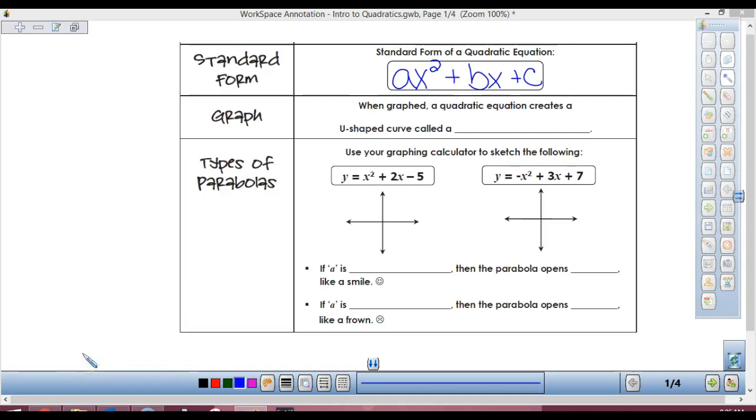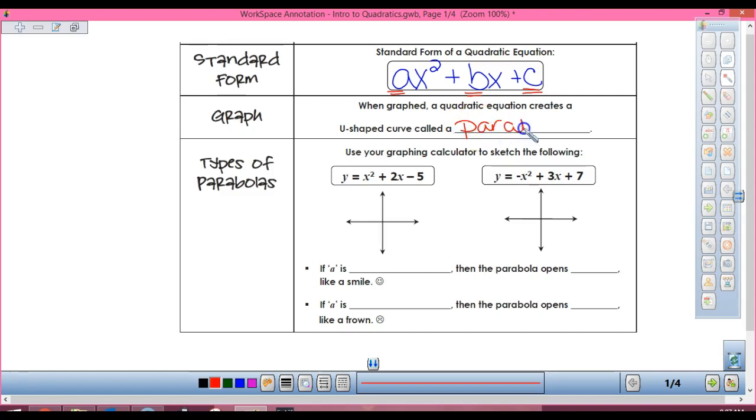Alright, so standard form: ax squared plus bx plus c. a, b, and c are going to be numbers, and they're going to be important numbers, so we're going to actually talk about that as we go along today. The graph is a u-shaped curve. You guys remember that from Friday? And we call that curve a parabola.